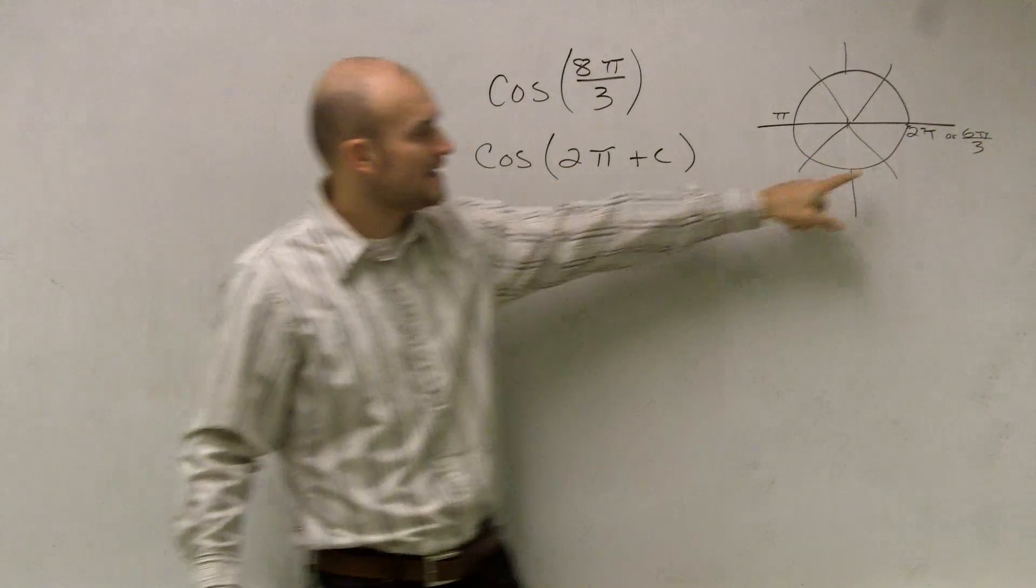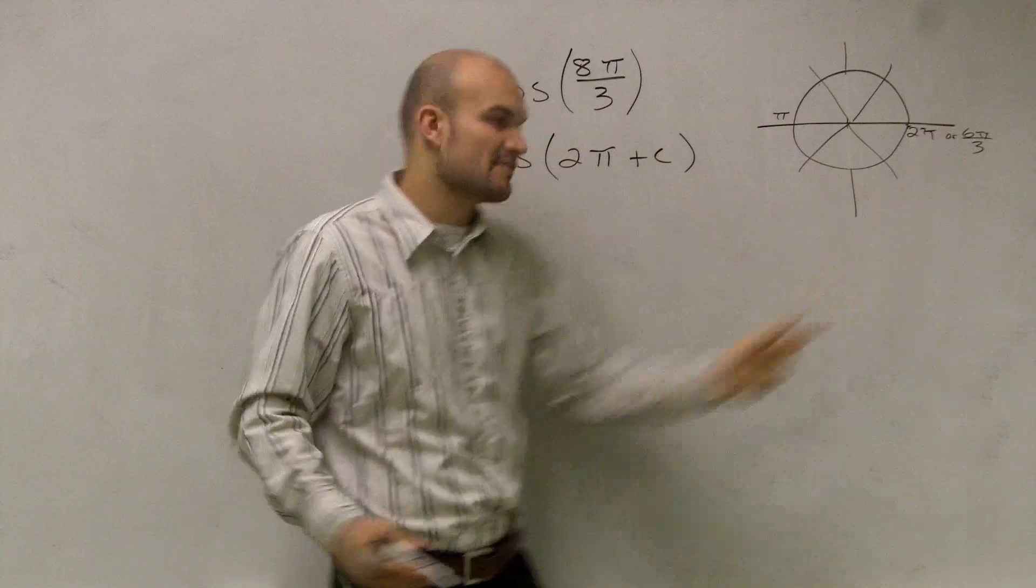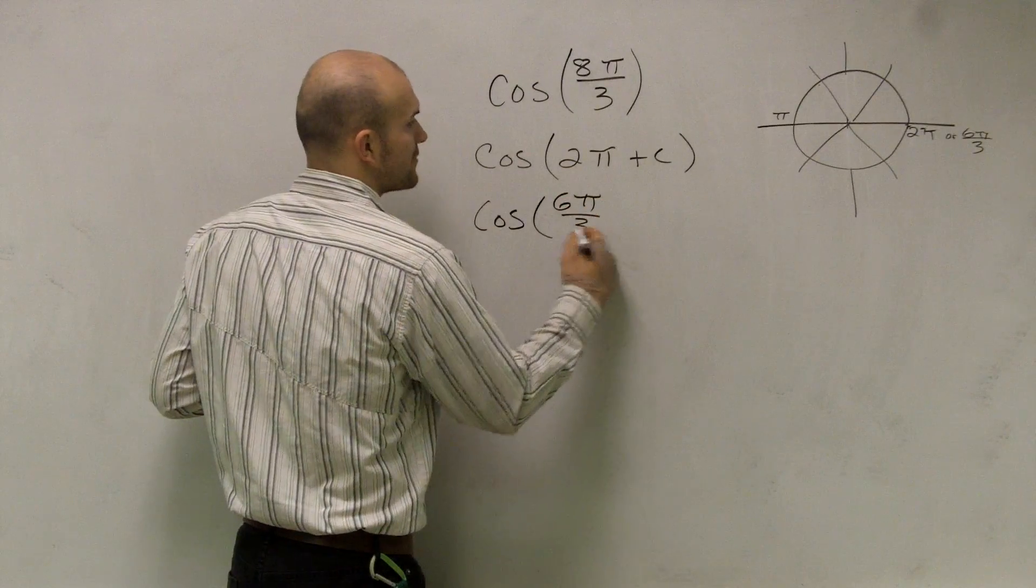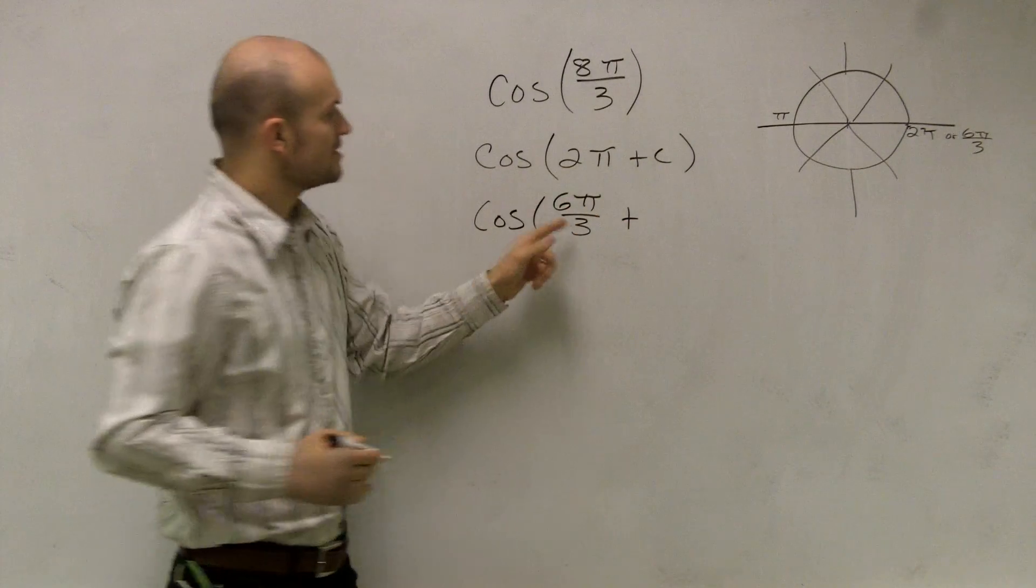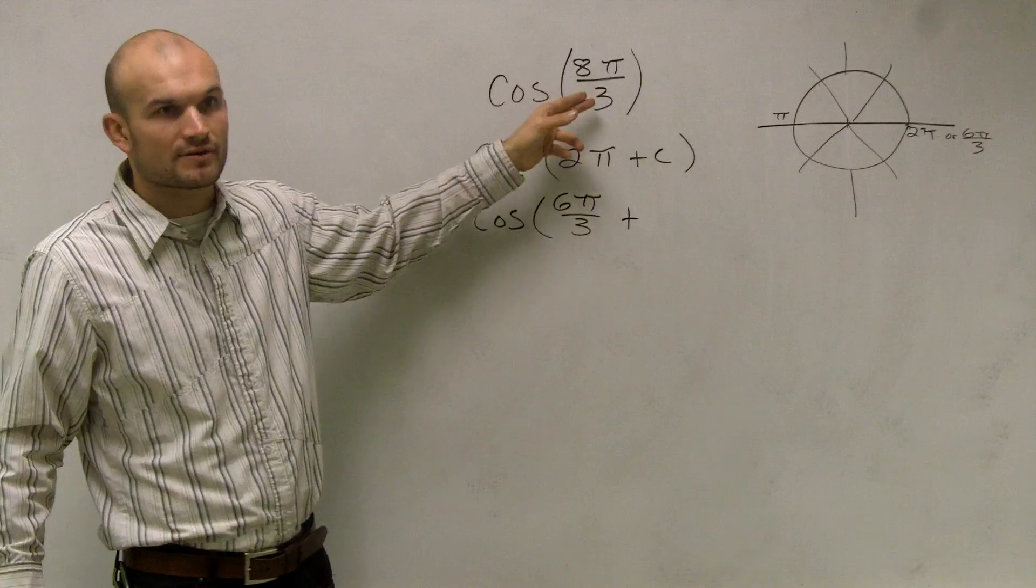So what is 2π in terms of thirds? Well, it's going to be 6π over 3. So I can write cosine equals 6π over 3 plus, now what is going to be my remainder to get to 8π over 3?